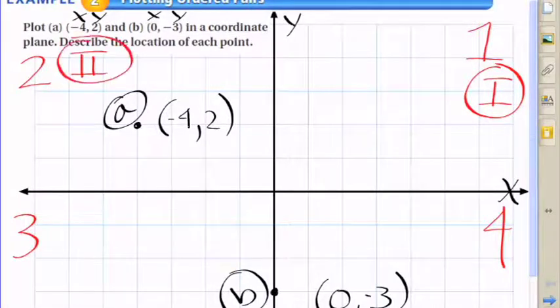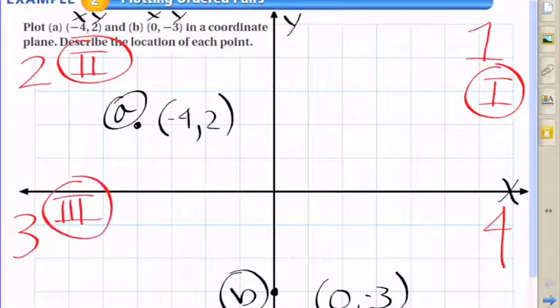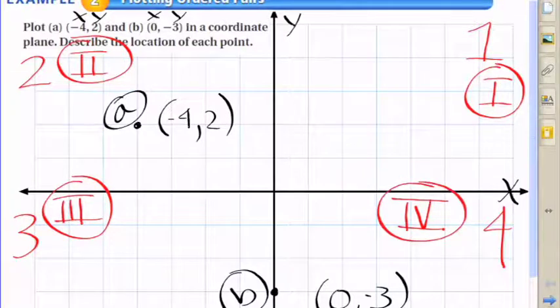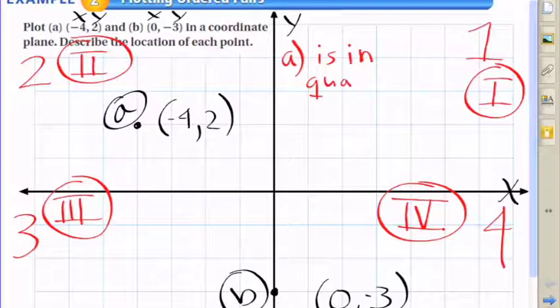It's important to note all these locations because you may be asked to describe the location of certain points. For example, the point (-4, 2) is in the second quadrant, or quadrant 2, as I'm writing right now.